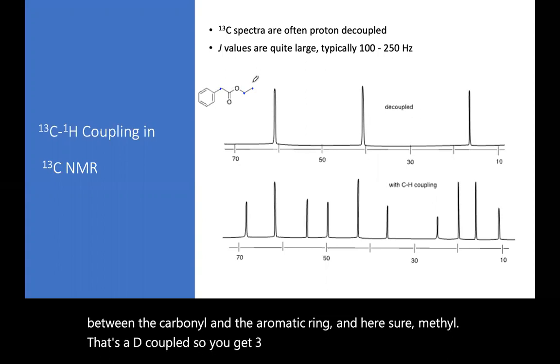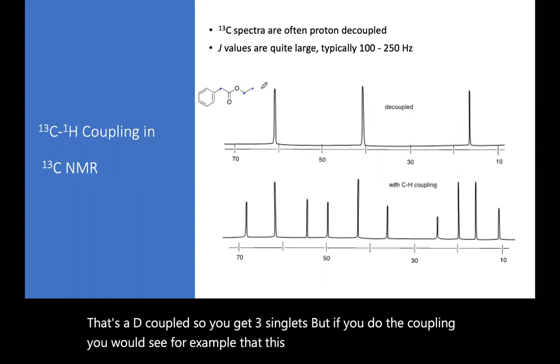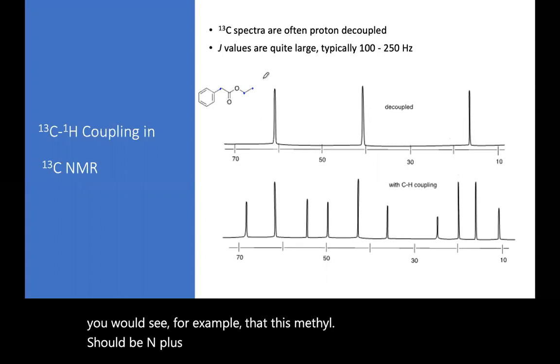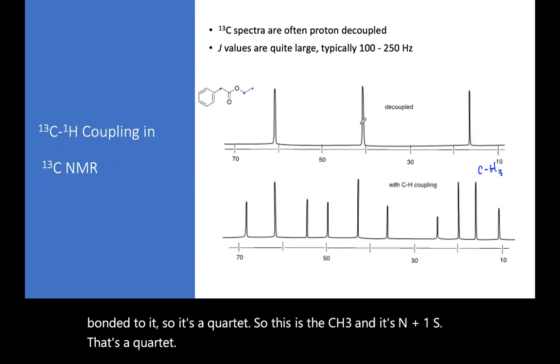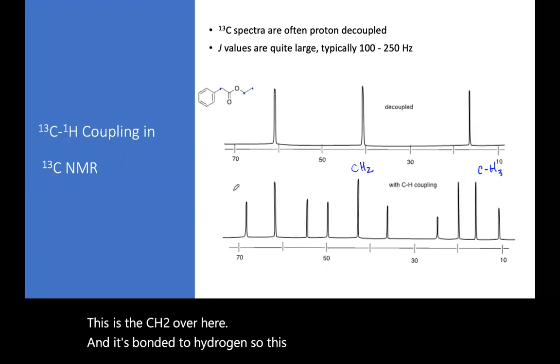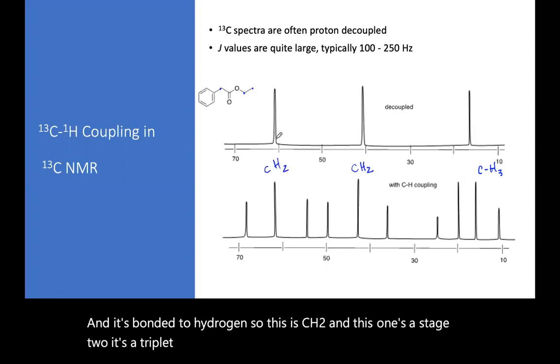But if you do the coupling, you would see, for example, that this methyl should be n+1 because it will couple to all three of the hydrogens bonded to it. So it's a quartet. So this is the CH3, and it's n+1, so that's a quartet. This is the CH2 over here, and it's bonded to two hydrogens. So this is a CH2, and this one's a CH2, it's a triplet as well, and it's the one next to the oxygen.